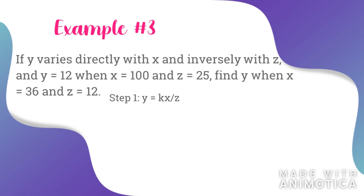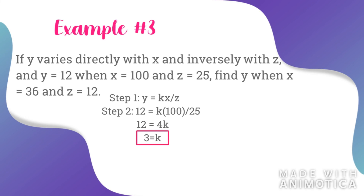Step number two: rewrite the equation by substituting the information given to get the constant of variation. We have the equation 12 is equal to k multiplied by 100 all over 25. Simplify this to get the constant of variation, which gives us k is equal to 3. Step number three: rewrite the equation with the constant of proportionality. We now have y is equal to 3x all over z.